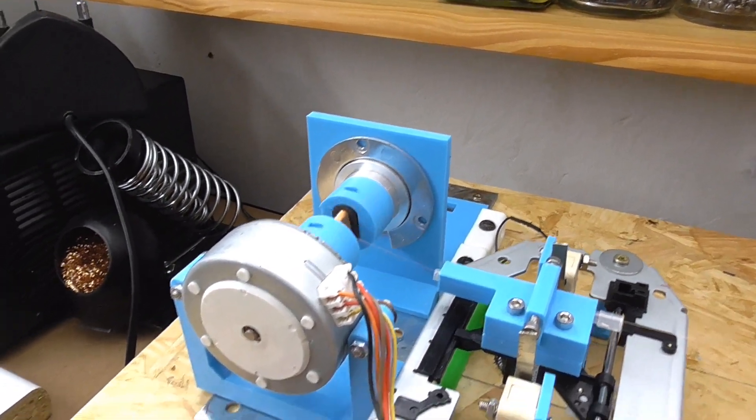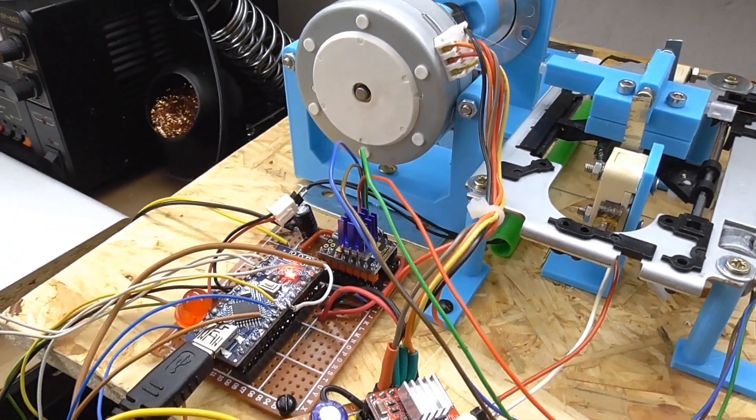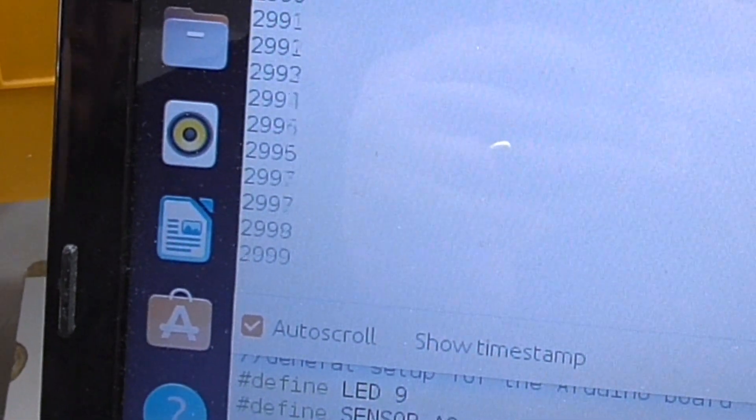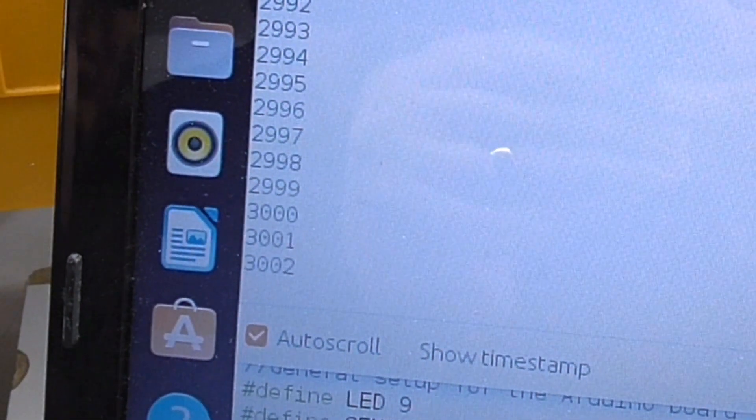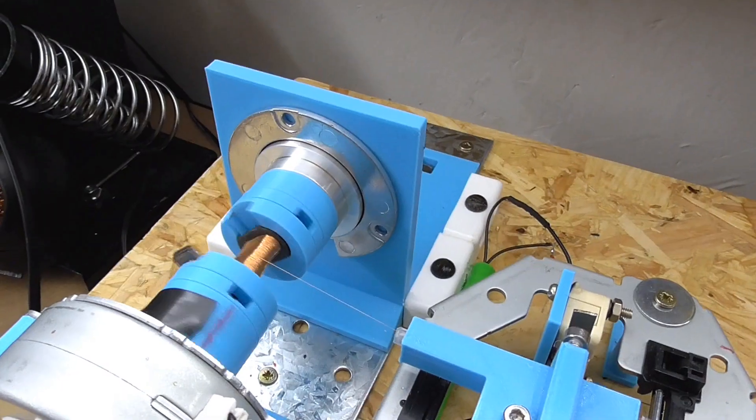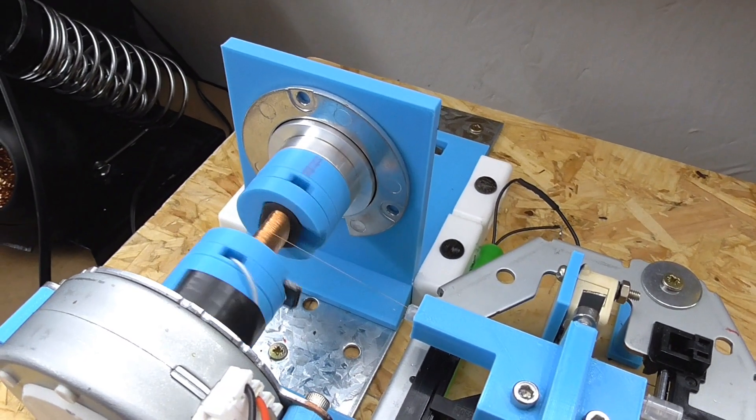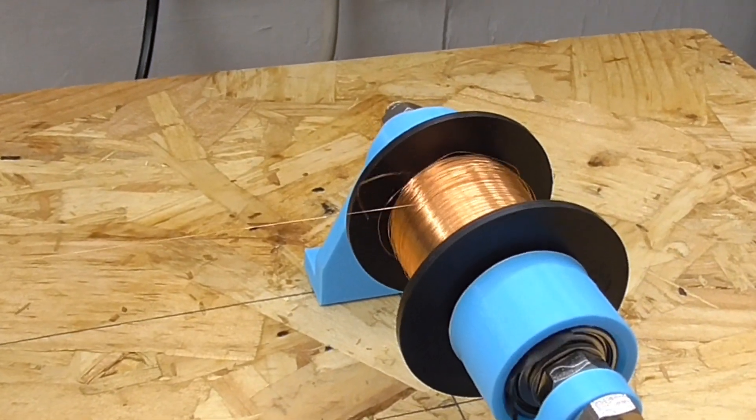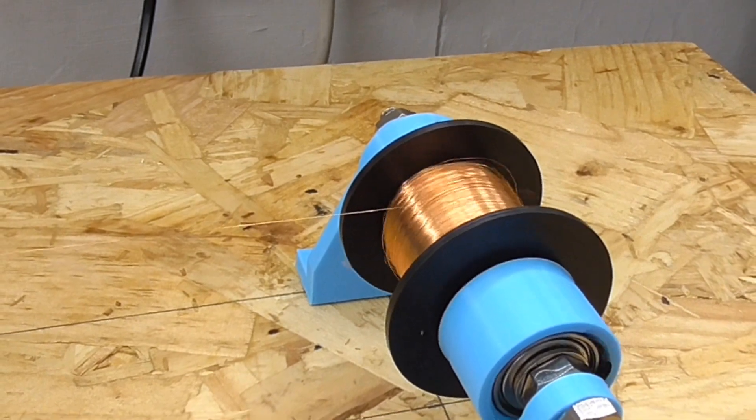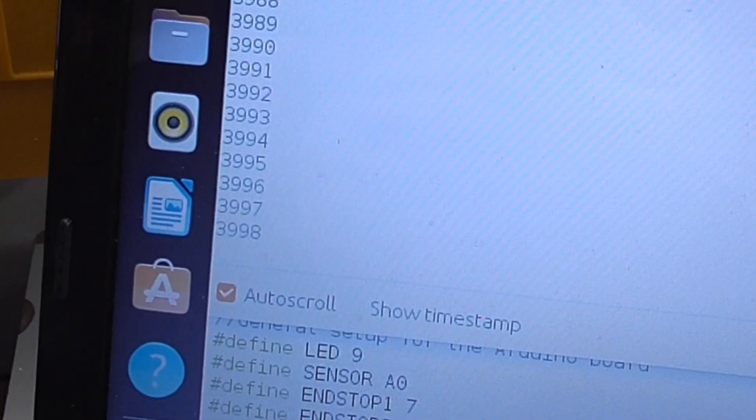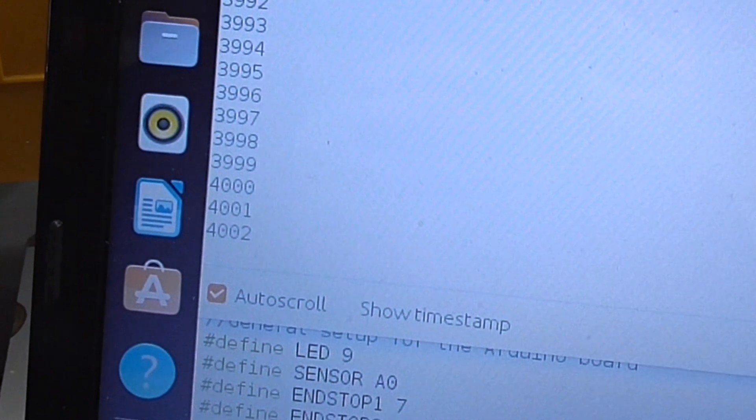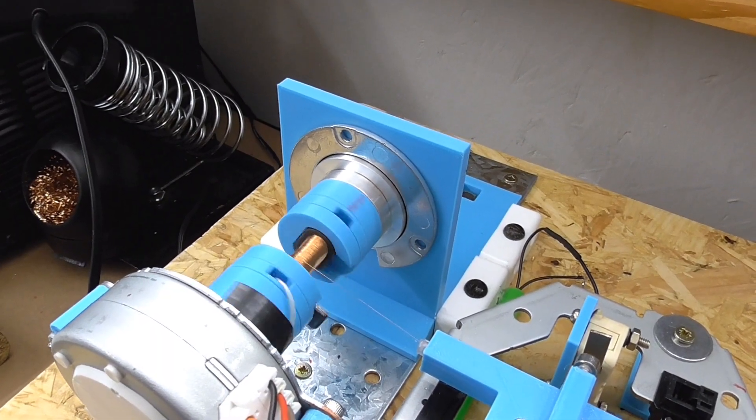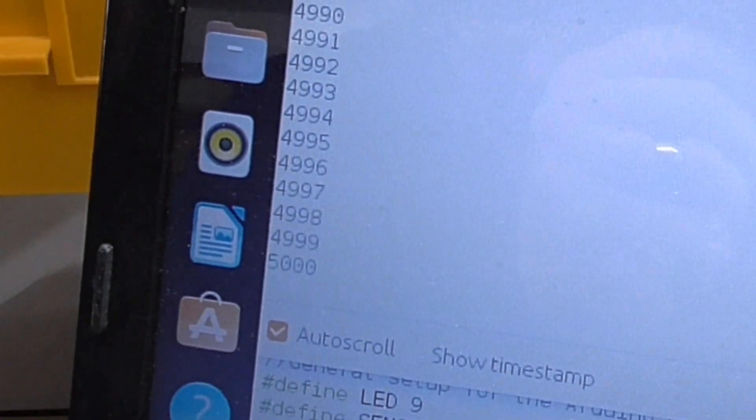The Arduino is sending back the count to my laptop. Just coming up to 3,000 turns. Coil is looking good too. Still a bit worried about those loose strands. Now 4,000 turns. And the big 5,000 turns mark.